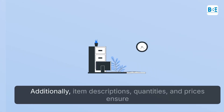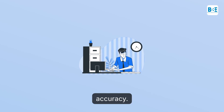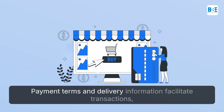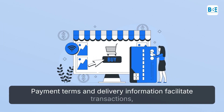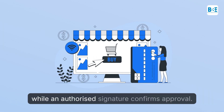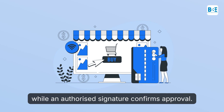Additionally, item descriptions, quantities, and prices ensure accuracy. Payment terms and delivery information facilitate transactions, while an authorized signature confirms approval.